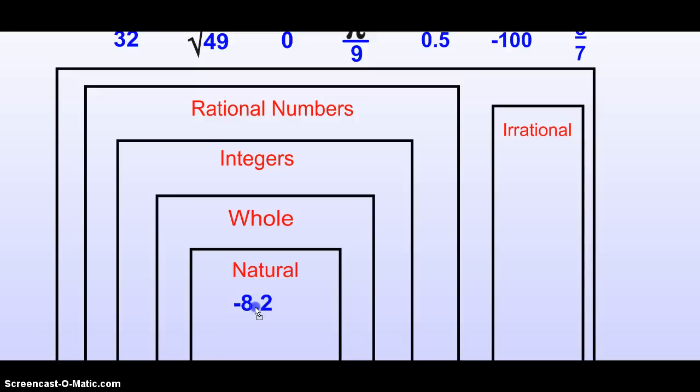If we start from the inside, would negative 8.2 be natural? No, because those are the counting numbers. We start at 1 and go up. That wouldn't work. Whole numbers? No, that starts at 0 and goes up. That wouldn't work. Integers. Negative 8.2 would be an integer.